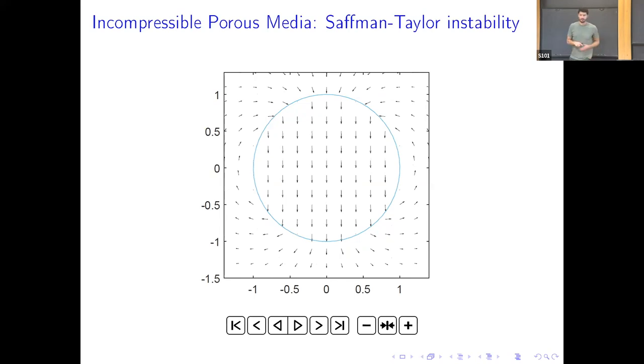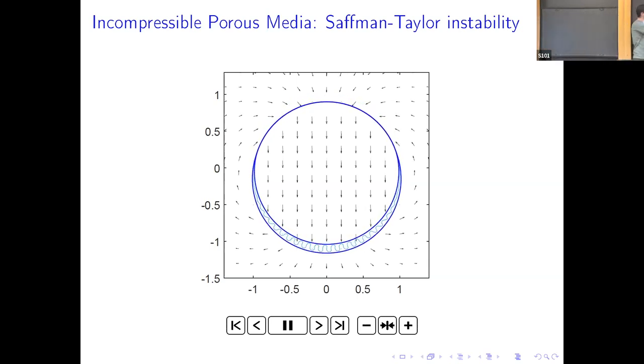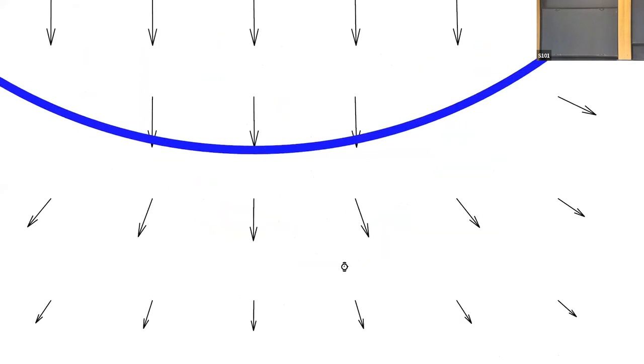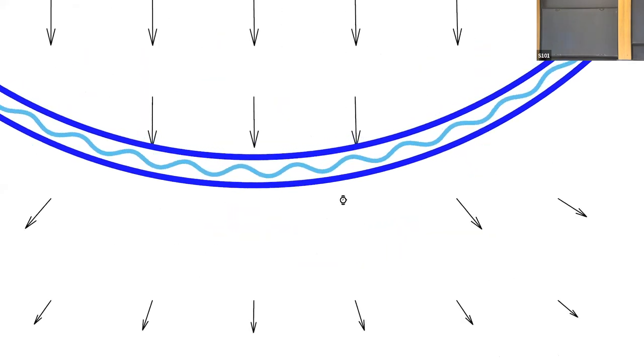Now we can do as before, make some perturbation of this circle, and see what happens with the curve where the density is discontinuous. And what we observe is that in the region where the heavier fluid is below the lighter one, it's like there is no perturbation. However, in the region where the heavier fluid is above the lighter one, we observe that the perturbation creates this kind of finger pattern.